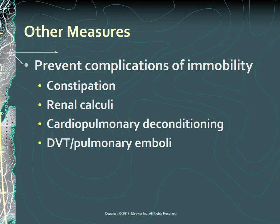Renal calculi can develop from bone demineralization related to reduced mobility. Hypercalcemia from demineralization causes a rise in urine pH and stone formation resulting from the precipitation of calcium. Unless contraindicated, a fluid intake of 2,500 mLs per day is recommended. Rapid deconditioning of the cardiopulmonary system can occur as a result of prolonged bed rest, resulting in orthostatic hypotension and decreased lung capacity.